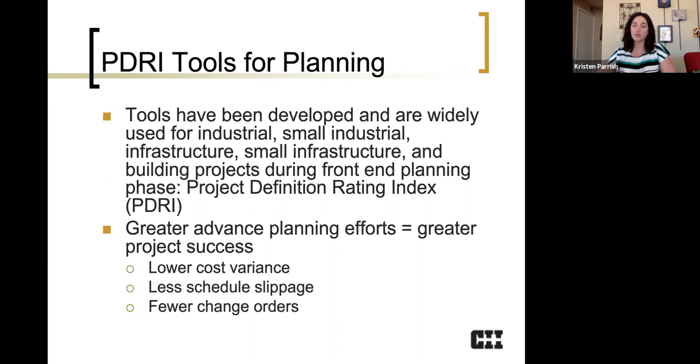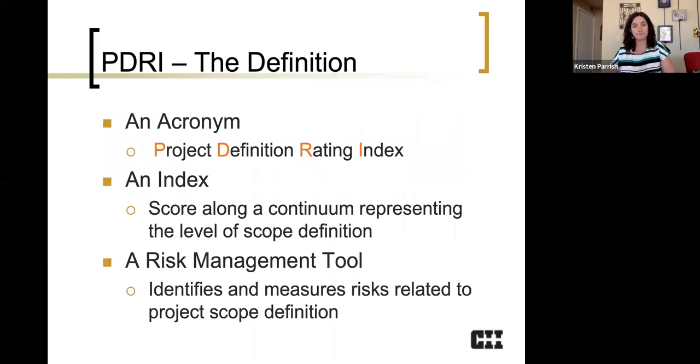And what we found over about 30 years of research at CII is that the more effort you spend in planning, generally as a percentage of budget, the better off you're going to be in terms of your project performance. And that's both in terms of cost and schedule. So cost is both via cost growth and lower cost variance, as well as a reduced number of change orders. And then for schedule, of course, we're looking at slip.